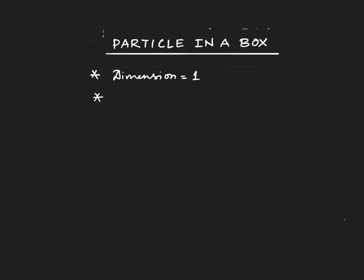In one dimension, you know how the Schrödinger equation looks like. It's minus ℏ² over 2m times d²ψ/dx² plus V(x)ψ(x) equals Eψ(x). So this one is your wave function.